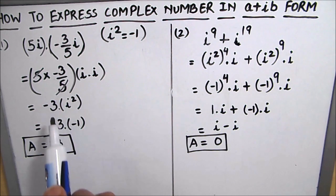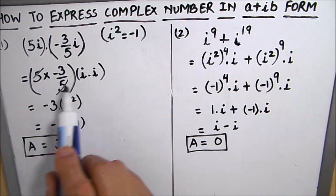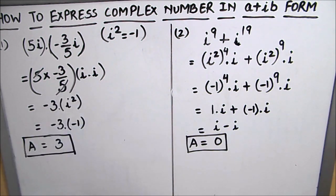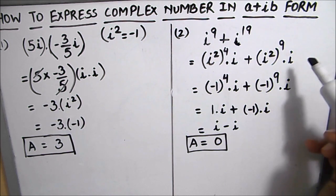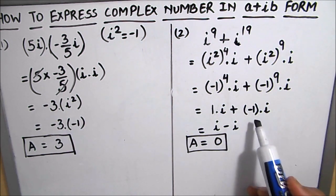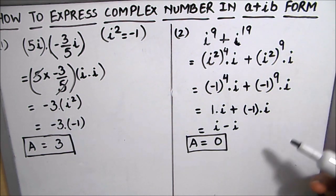Our main purpose is to separate the imaginary and real numbers and replacing iota square with minus 1. And if we follow these two things we can reduce any complex number in a plus ib form.